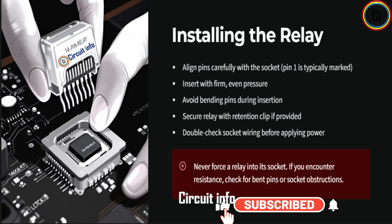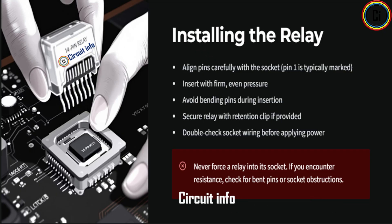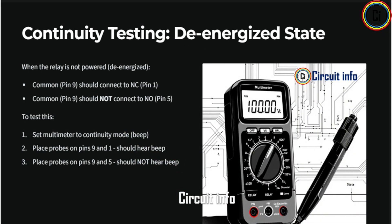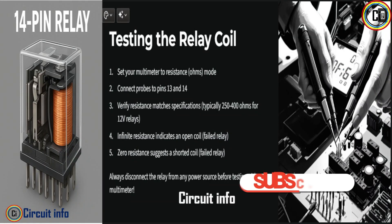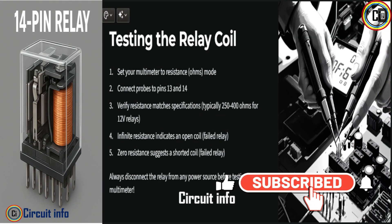Testing a 14-pin relay is simple. Check the coil resistance between pin 13 and 14, test contacts using a multimeter in continuity mode, verify wiring in the relay circuit, and always ensure the contact rating matches the load current.